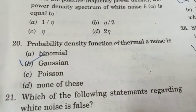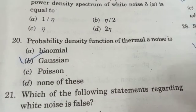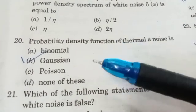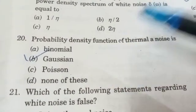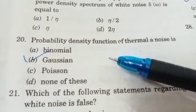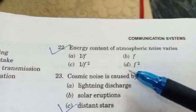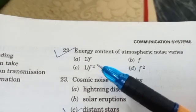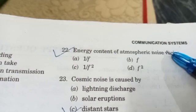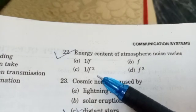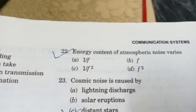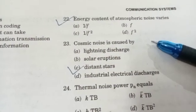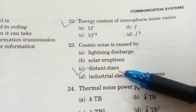Next question: the probability density function of thermal noise follows a Gaussian distribution. The energy content of atmospheric noise varies as 1/f. Cosmic noise is caused by distant stars.